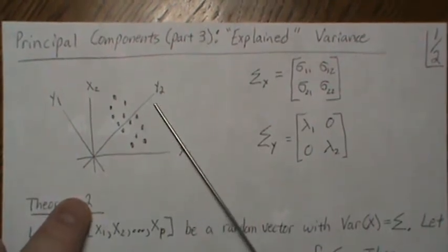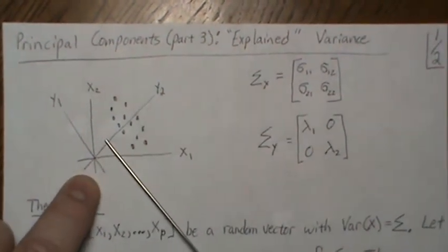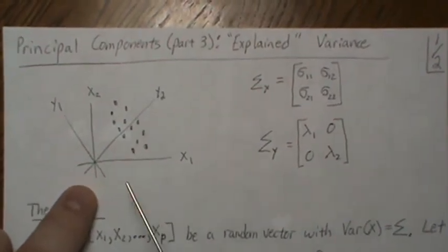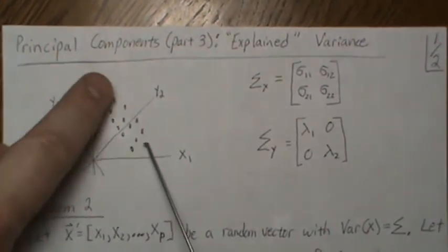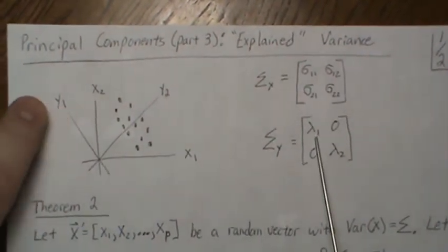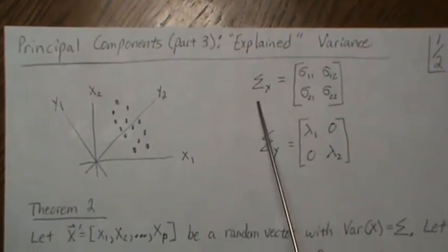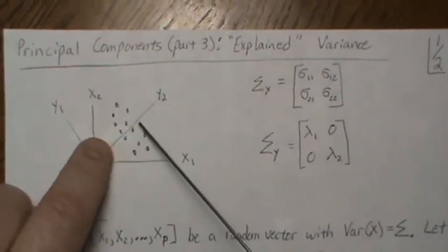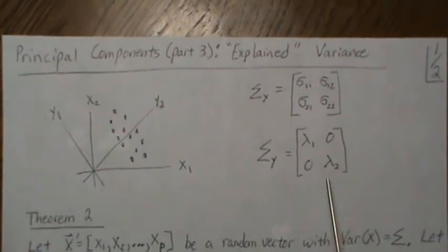Since it's two dimensions, y2 is determined because there's only one possible way to be orthogonal to y1. We also learned that the variance associated with the first principal component — if you map this down — that variance is lambda 1, the first eigenvalue of the covariance matrix. And if we were to map this variance down onto y2, then that variance is lambda 2.